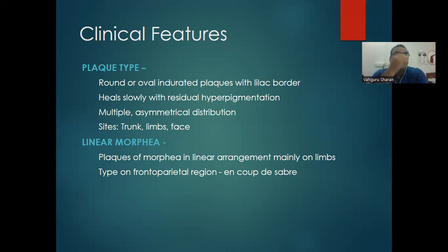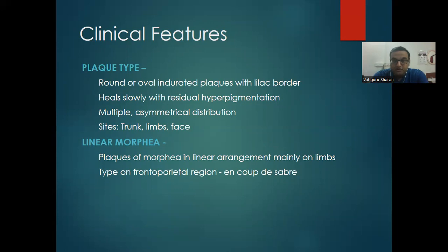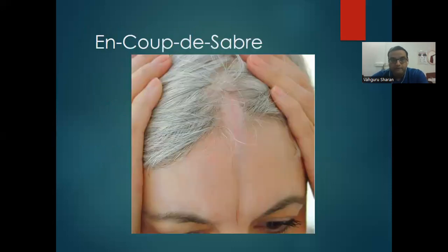Linear morphea — plaques arranged linearly, mainly on limbs. When present on a specific site on the forehead extending to the scalp, it is called en coup de sabre, meaning somebody has hit you with an axe or sabre — causing a linear depression on the head. This is a type of linear morphea.